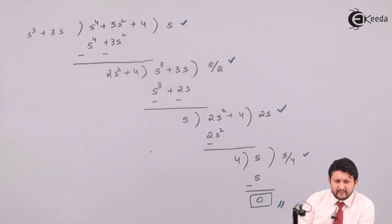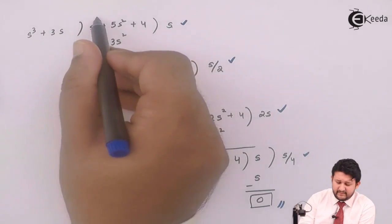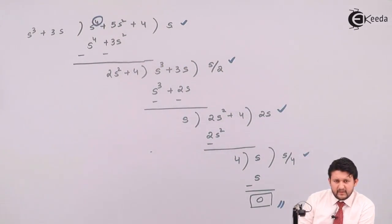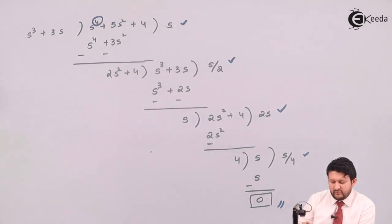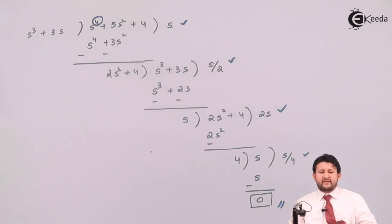The highest power in the equation was four. The number of terms should be equal to the highest power plus one. The number of highest power was four, so it will be five terms. So all these conditions, if I check and they are true, then that equation is termed as Hurwitz polynomial.